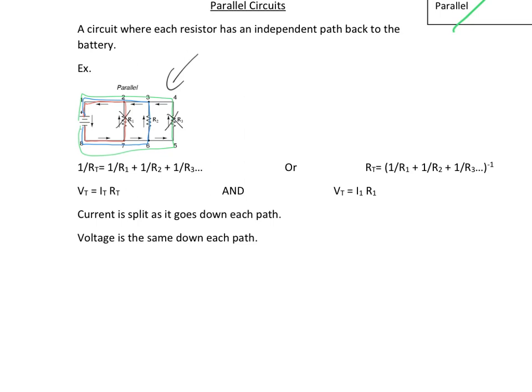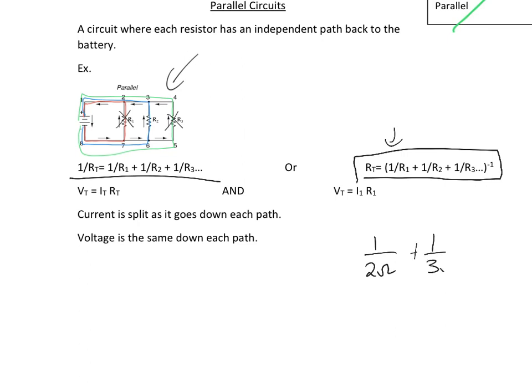Now this is where it gets a little funky — parallel is just a little bit weird. The way you add up resistance in a parallel circuit uses this formula. So if you're trying to figure out the resistance in a parallel circuit, you take one over your first resistor, say 2 ohms, plus one over your second, say 3 ohms, plus one over your third, say 4 ohms — put all of that in parentheses, then hit the x to the negative 1 button and it'll flip it for you. The weird thing about a parallel circuit is that the more resistors you have, the less resistance there is.